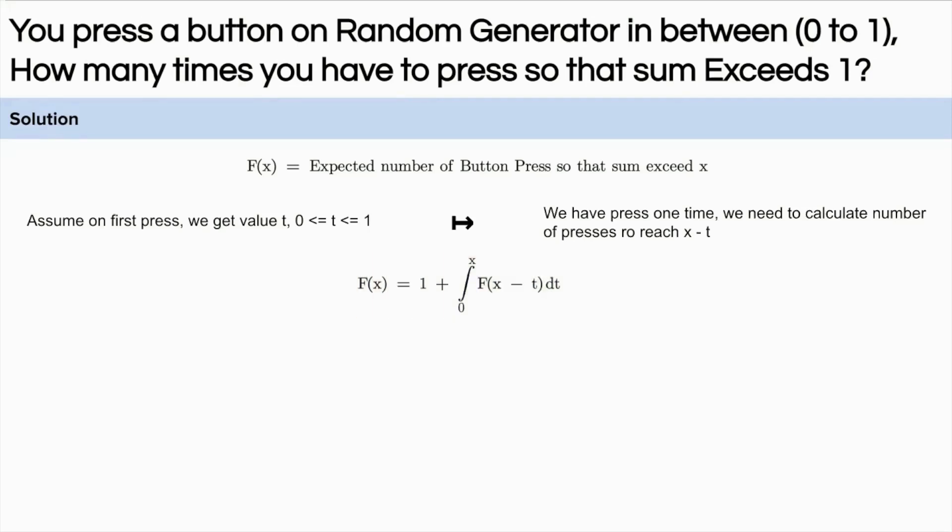Now we will transform the variable by putting t as x minus t. It is as easy as transforming the integration. After transformation we will get f(x) equals 1 plus integral of f(t) dt from 0 to x.